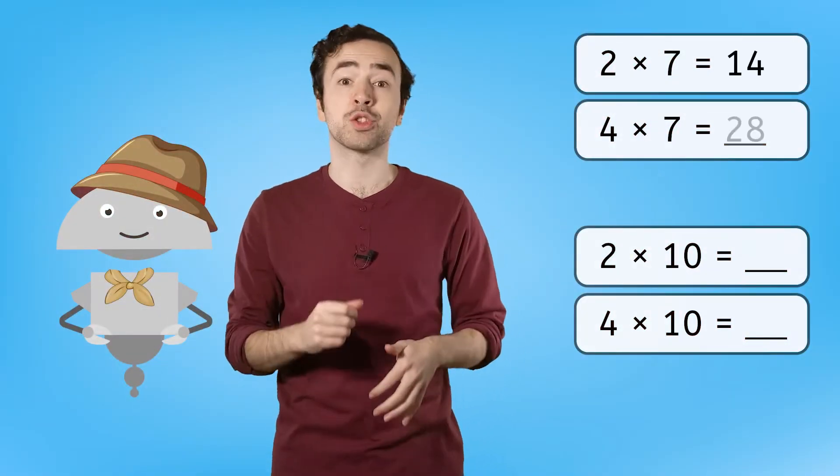So, two times seven is 14, while four times seven is 28, and two times 10 is 20, while four times 10 is 40.